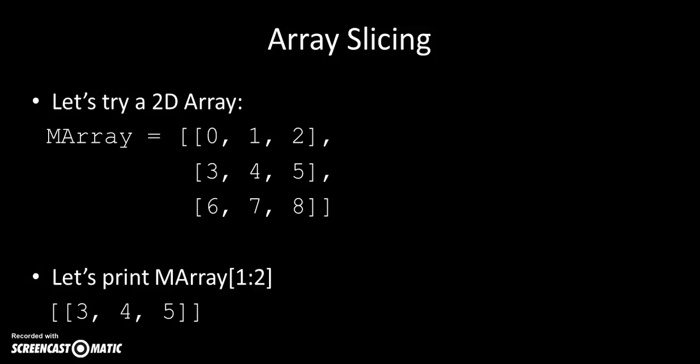If I do 1 colon 2, that means I get the middle element of the array, index number 1. If I do 2 colon 3, I get the last element of the array, index number 2, if we think of zero as the first.